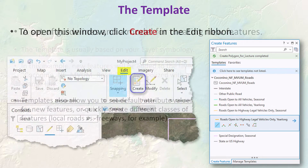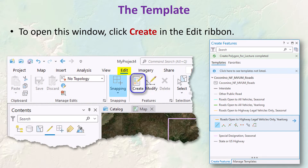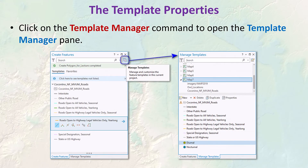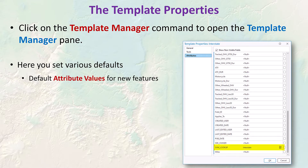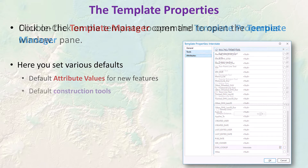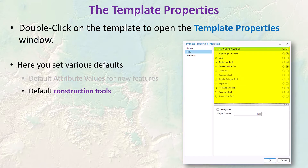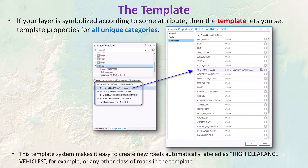You need to have the Create Features window open to select and edit templates. If you don't see this window, click the create command in the edit ribbon to open it. Once it's open, you can click the template manager command to open the template properties window, where you can set various defaults including default attribute values for all new features, and specify which construction tools are available when creating new features.